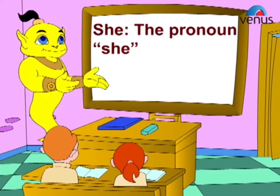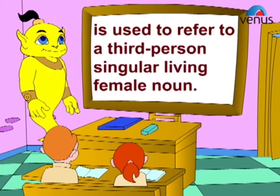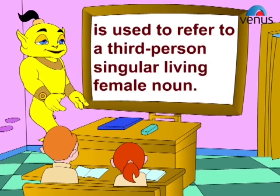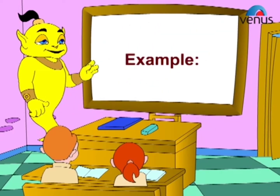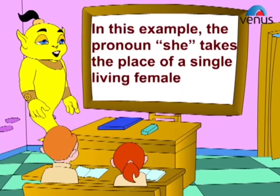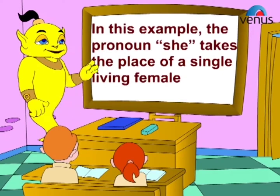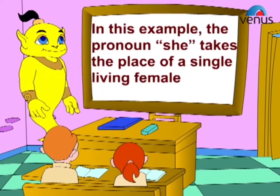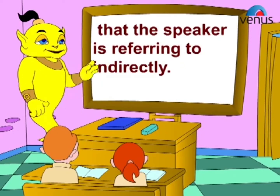The pronoun 'she' is used to refer to a third-person singular living female noun. Example: Does she know what time it is? In this example, the pronoun 'she' takes the place of a single living female that the speaker is referring to indirectly.